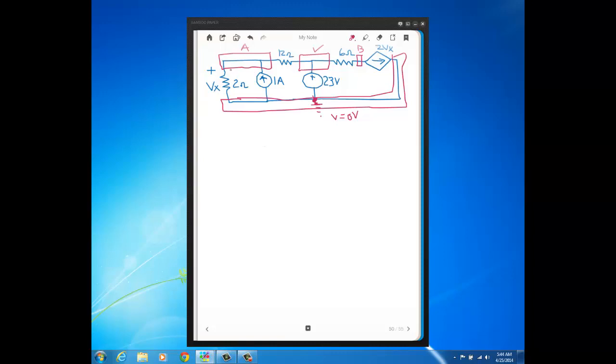So here at node A, I'm going to define a current like this that I'll call I1. And I picked I1 going down to agree with this polarity that was given for Vx, which is the voltage across the 2 ohm. Then I'm going to have a current like this that I'll call I2, and then a current here through the 6 ohm that I'll label I3.